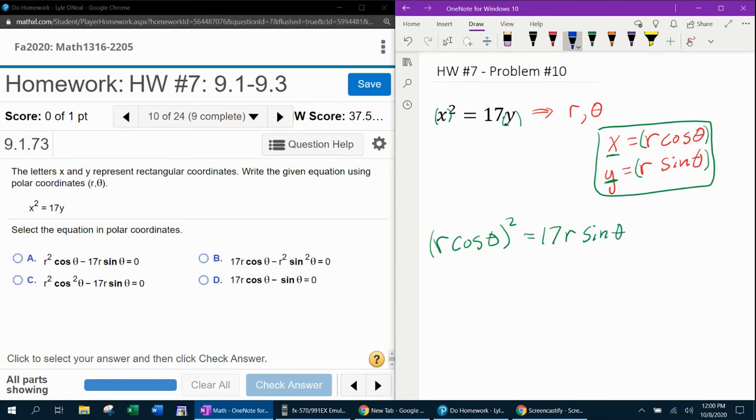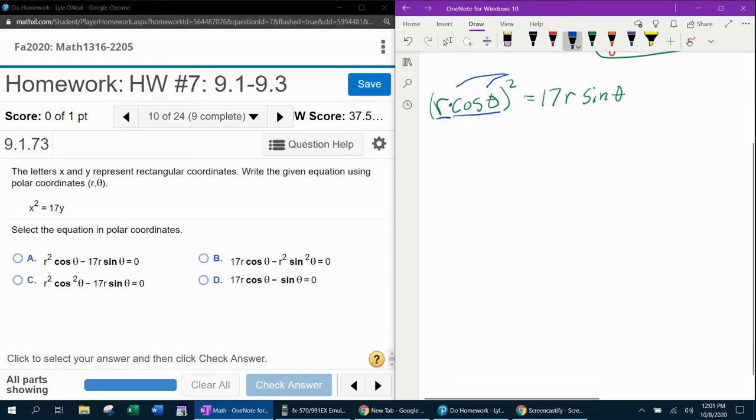Now since the r cosine theta, those are two separate factors, the squared is going to apply to both of those. So simplifying that would give us r squared cosine squared theta equals 17 r sine theta.